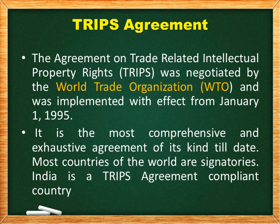Next, the TRIPS Agreement — an Agreement on Trade Related Intellectual Property Rights — was negotiated by the World Trade Organization and implemented with effect from January 1st, 1995. It is the most comprehensive and exhaustive agreement of its kind to date, and most countries of the world are signatories, including India.